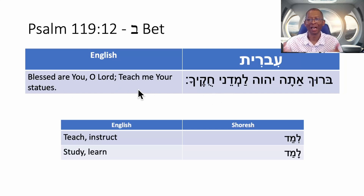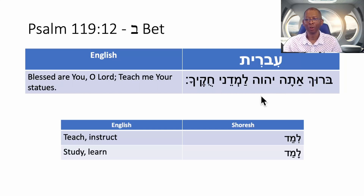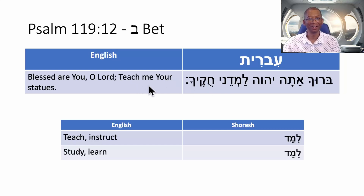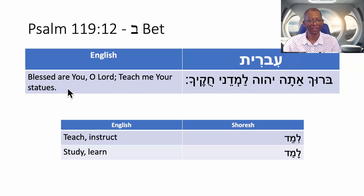Let's break this down. Baruch atah Adonai — baruch is blessed, atah is you, Adonai is Lord, or O Lord. So baruch atah Adonai: blessed are you, O Lord. Lamedani hukiyacha — lamedani is teach me; ni is me. And then hukiyacha — the ha ending is you again. Hukiyacha is statutes. So lamedani hukiyacha: teach me your statutes.